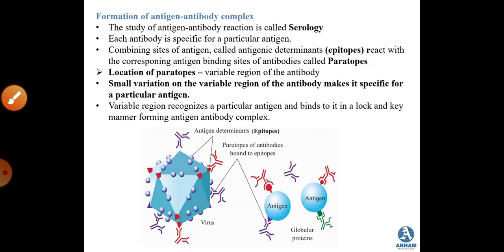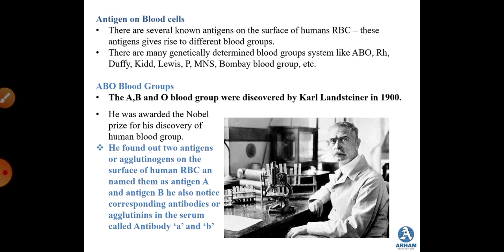There are several antigens present on the surface of human RBCs that give rise to different blood groups. Many genetically determined blood groups exist: the common ones are ABO and Rh. Rarer groups include Duffy and Kidd — named after the patients in whom they were first discovered — as well as the Lewis blood group, named because two genes on chromosome 19 determine it.